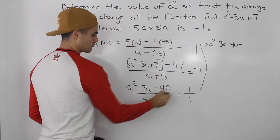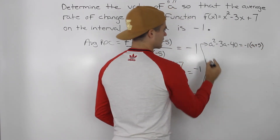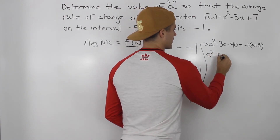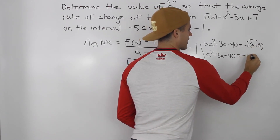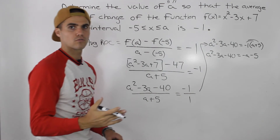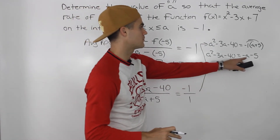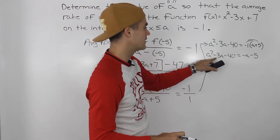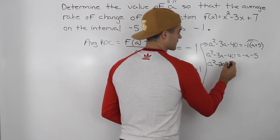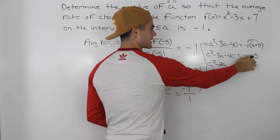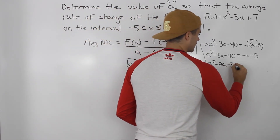The right side is going to be negative 1 times (a + 5), giving us negative a minus 5. Now let's bring everything over to one side and simplify. Negative 3a plus a gives us negative 2a, and negative 40 plus 5 gives us negative 35. So we have a² - 2a - 35 equals 0.